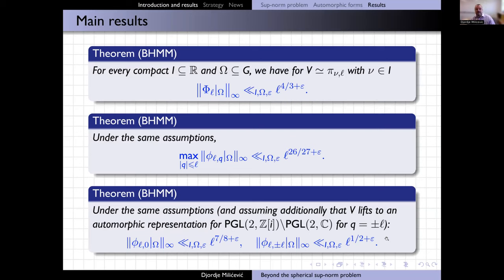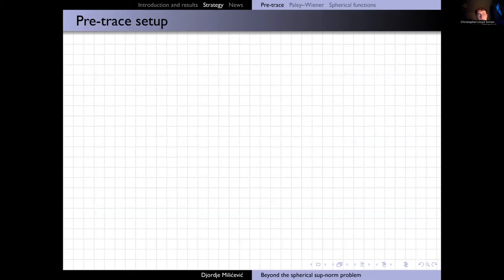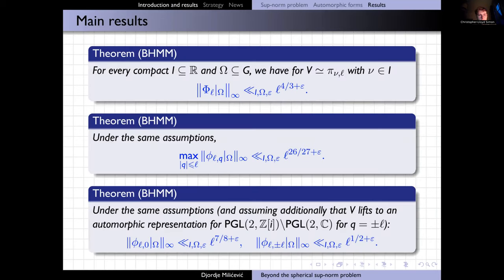Those are the three main results. There was a question: what are the assumptions? The forms are Hecke eigenfunctions, and gamma is SL₂(Z[i]) — we just stuck to that subgroup.